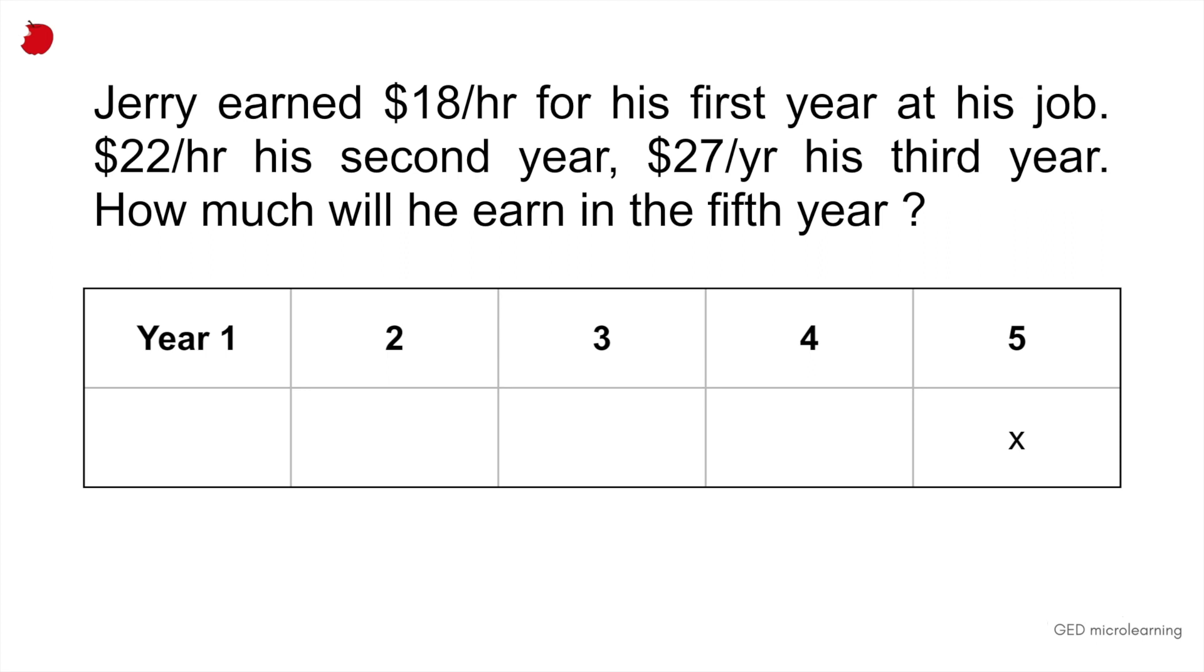So in the question they're asking us, how much will he earn in the fifth year? So that's our X value. And then they tell us that in the first year he earned $18 an hour, second year $22 an hour, third year $27, and they're not telling us what he earned in the fourth year. So at this point, what we want to do is we want to try to find out if there is a pattern or a sequence in how much he's earning. So if you look between year one and year two, how much more money is he earning? He's earning $4, right? And then if we look at year two to three, what's the difference between 27 and 22? It's $5, right?